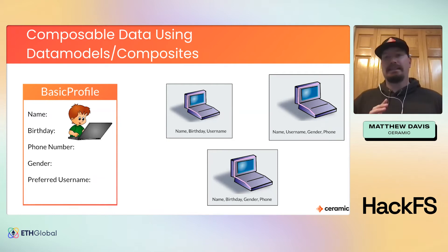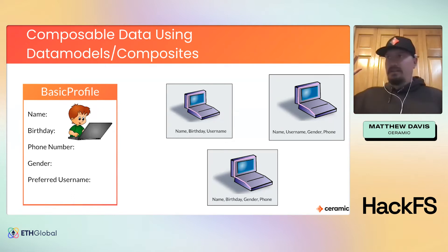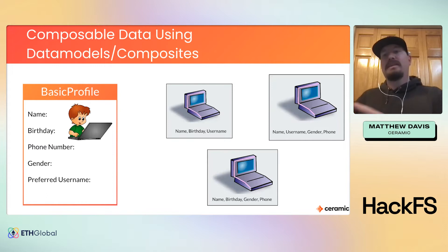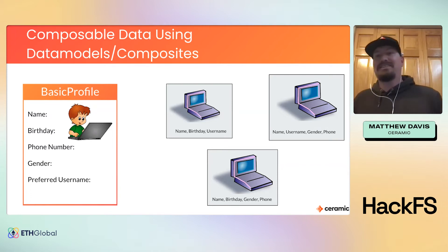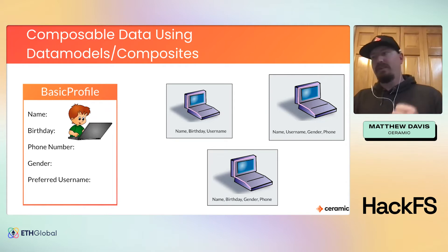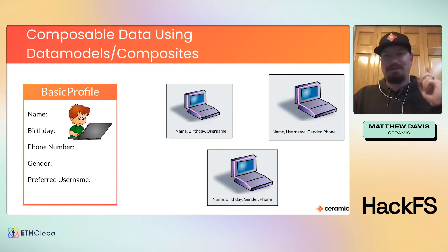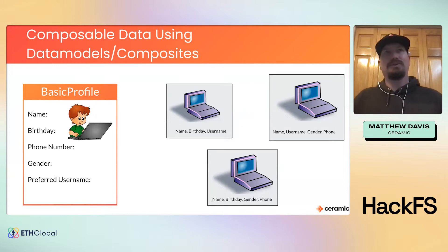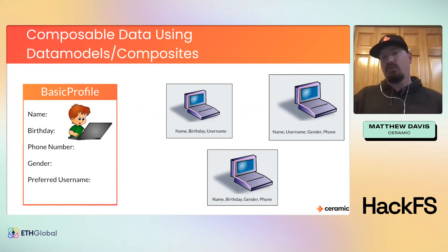Both point back to the same thing: you define the data one time in one location, and then all other applications can globally read from that data. A developer would say, 'My application needs data with this kind of schema,' create a model or composite for that, and then any other web2 or web3 app that finds that data valuable can just read from it. The user fills in a profile schema once, and every single application that leverages that profile can read from it — fill stuff out one time.